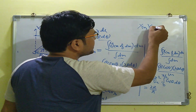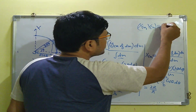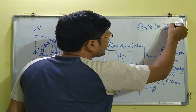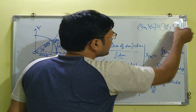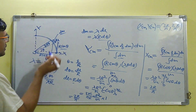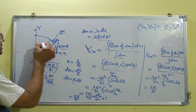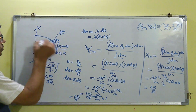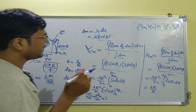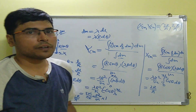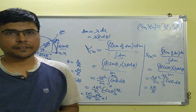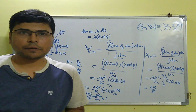So the final answer is that the center of mass (x_cm, y_cm) is located at (2r/π, 2r/π) from the origin along the x-axis and y-axis respectively. This is how we calculate the center of mass for a quarter circular ring.